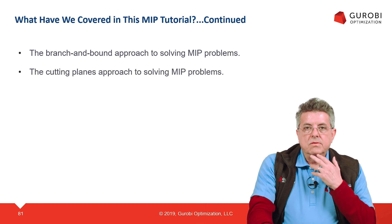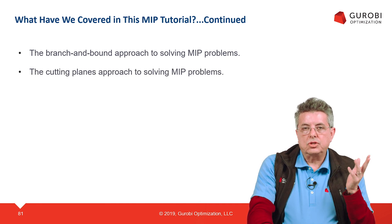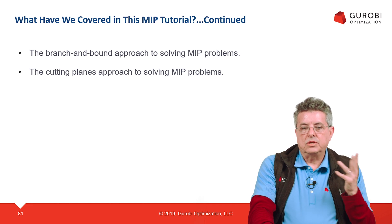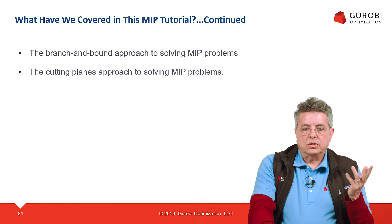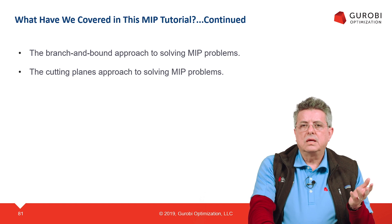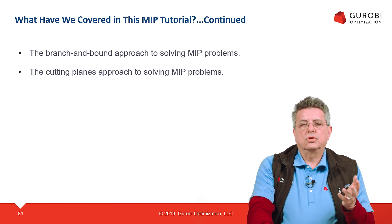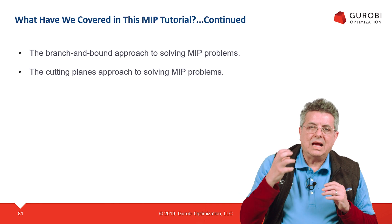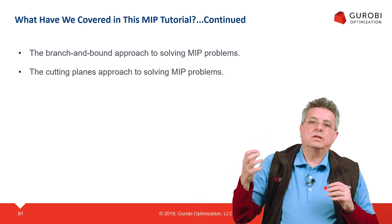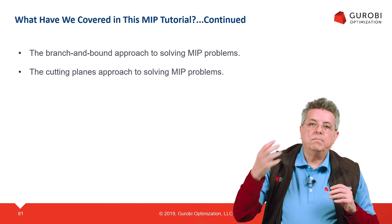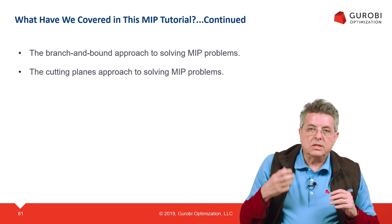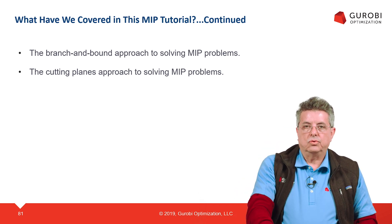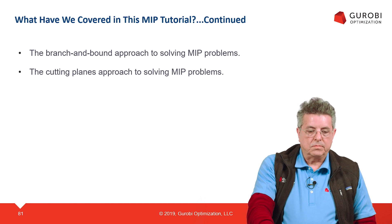We discussed two approaches: one called branch and bound, and the other called cutting planes. This was just an overview to give you an idea of how the GoodOvi optimizer works to solve MIP problems. In all these approaches, linear programming is the core algorithm being used.